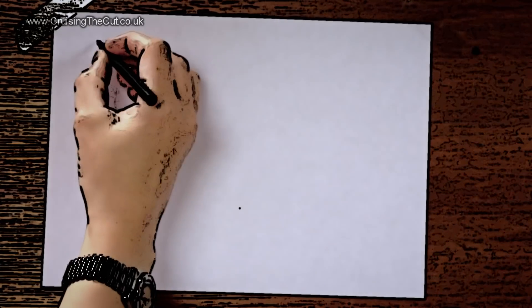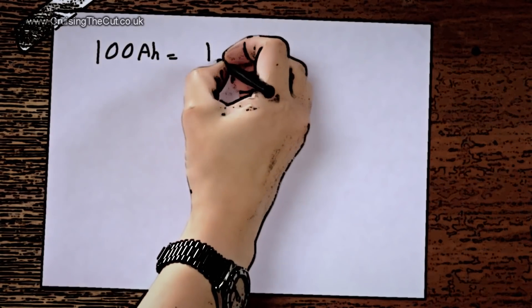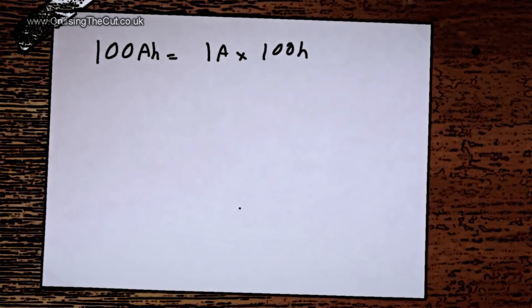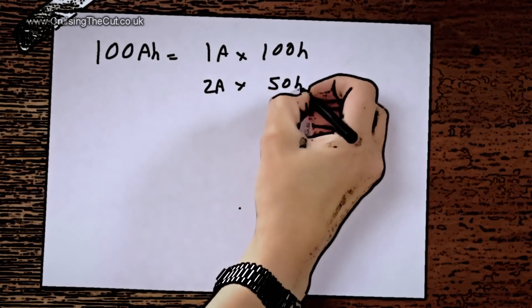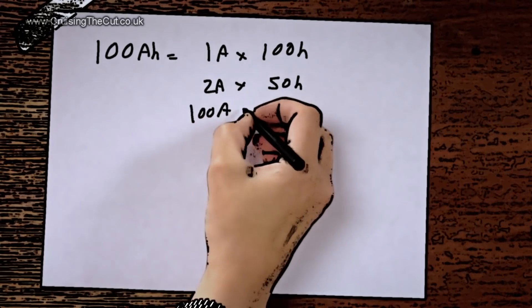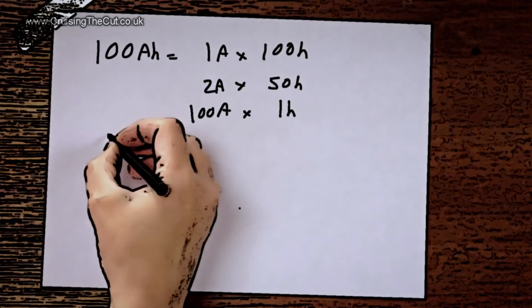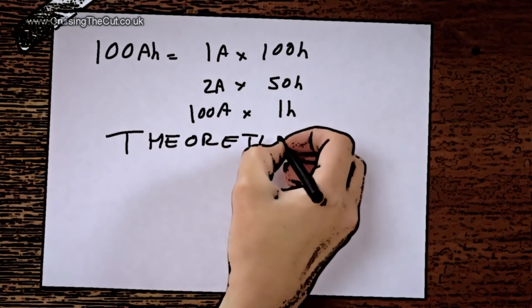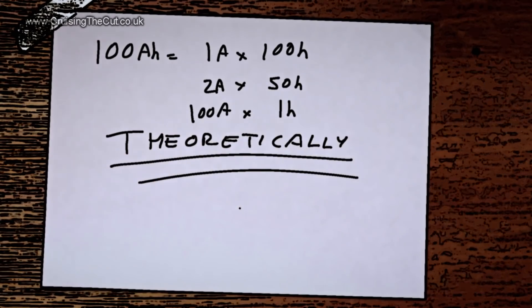This is where confusion often sets in because amps and amp hours are not quite the same thing. An amp is essentially an amount of electricity known as current. An amp hour is that current being delivered over the course of an hour. So for example, in theory a 100 amp hour battery could provide one amp for a hundred hours, or two amps for 50 hours, or a hundred amps for one hour. In practice it's not quite that simple because the more gently you try to pull the electricity out of the battery, the longer it can supply it for. Conversely, if you try and haul a lot of electricity out very quickly, it'll actually run flatter quicker than the stated amp hours capacity would have you believe.